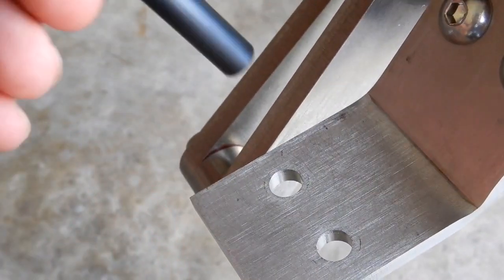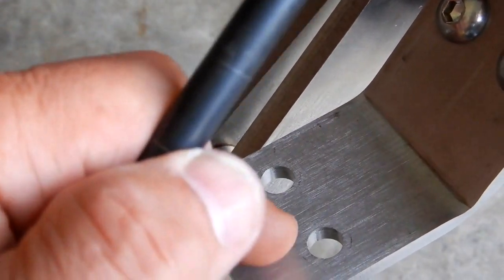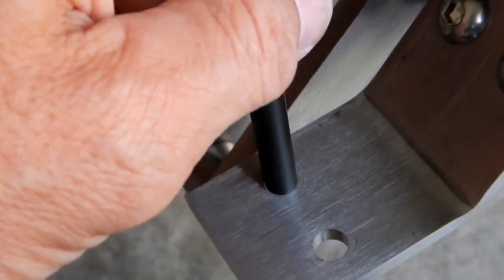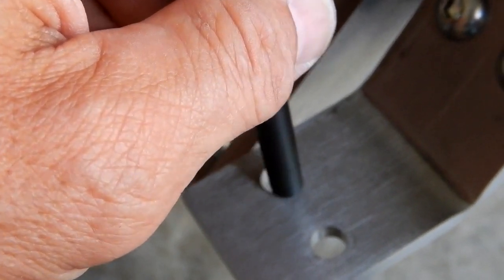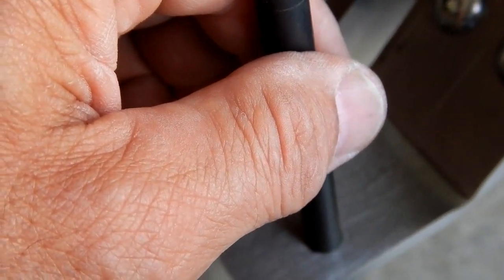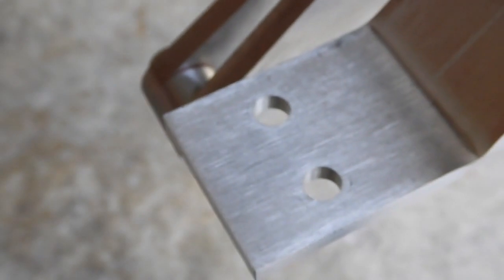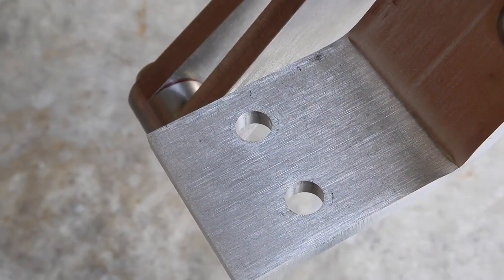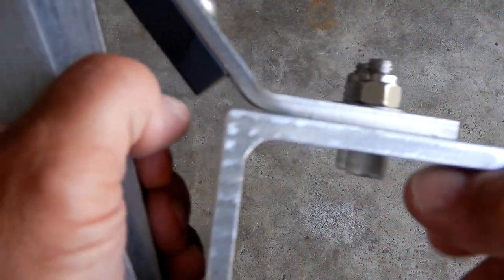So all I did was once this was clamped onto the aluminum, when I knew where I wanted it, put the transfer punch in here, tap it, put it in this hole, tap it, and that was the easiest way to get a very accurate location. This is what it looks like when it's anchored.